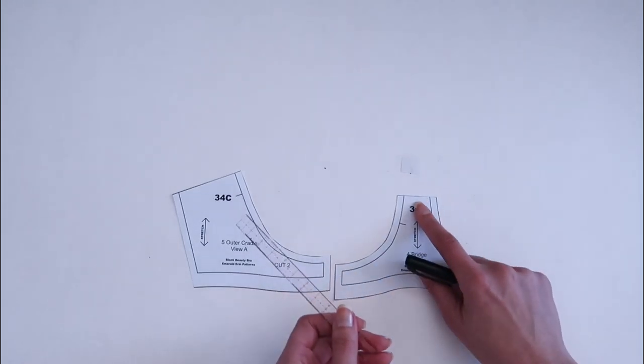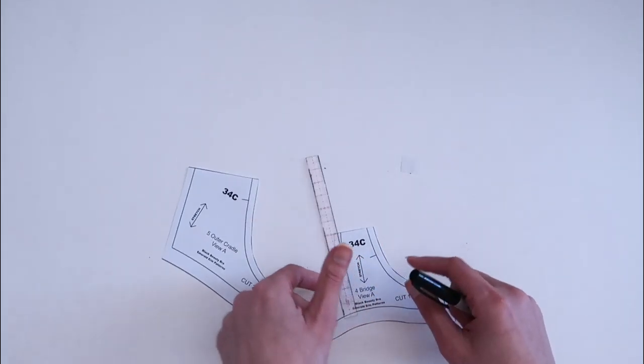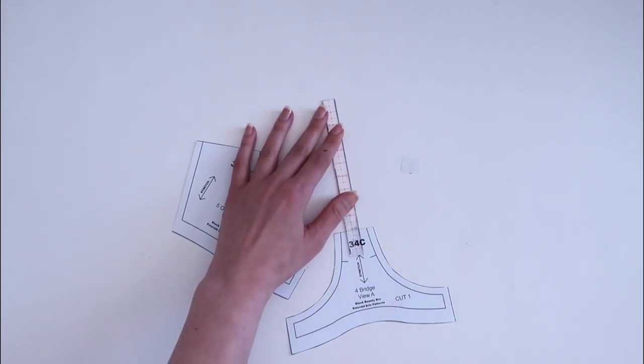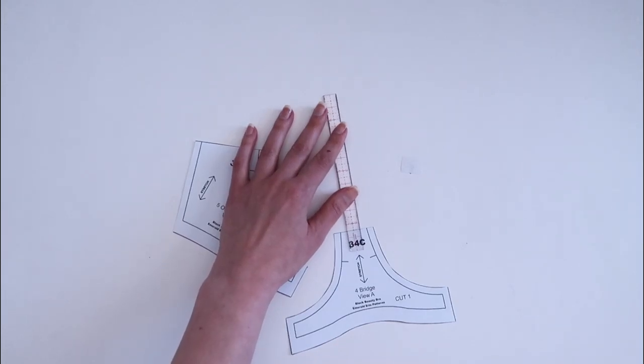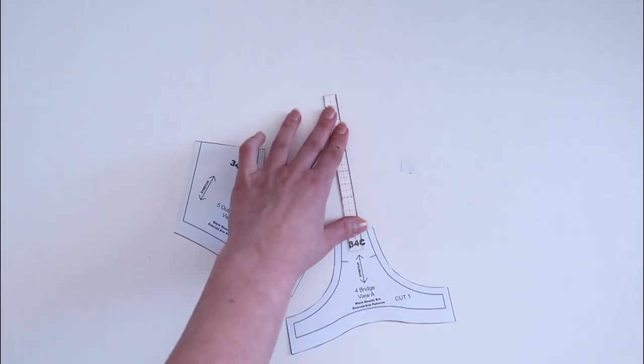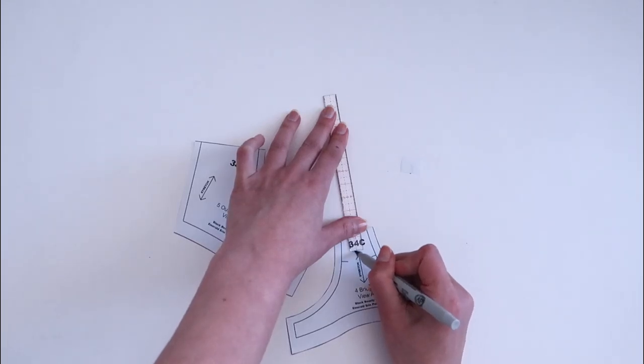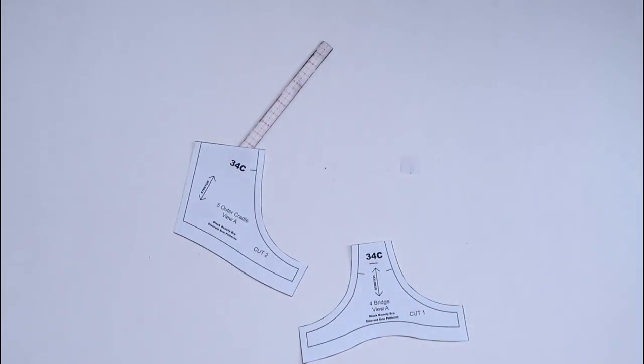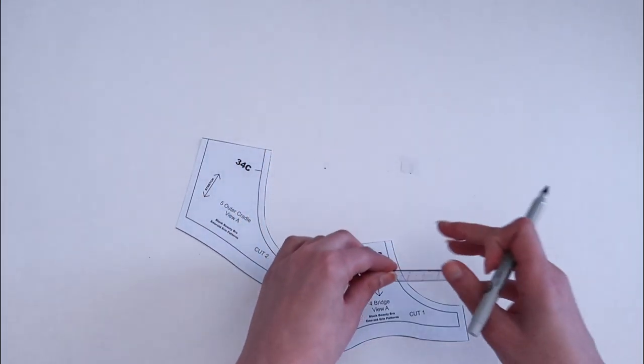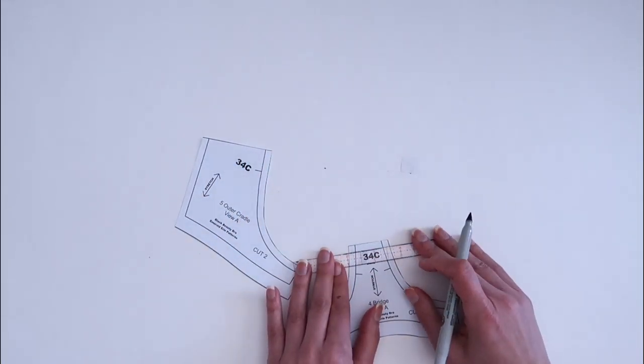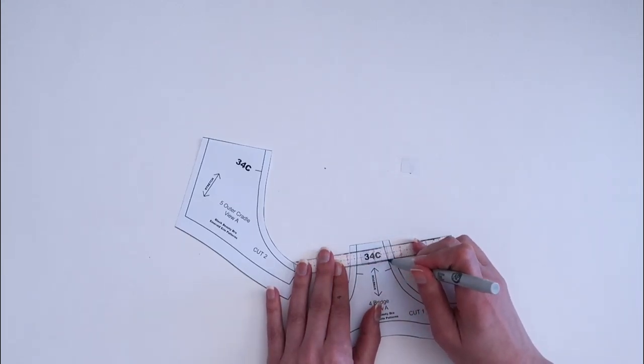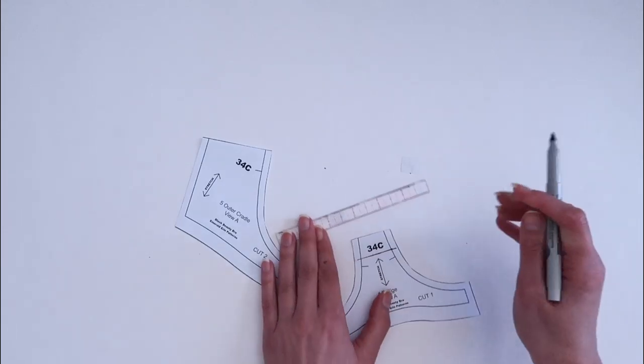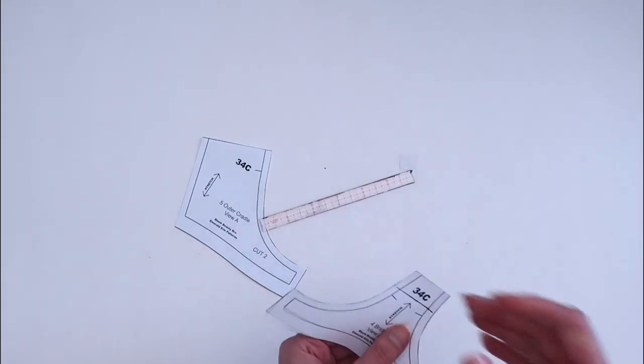So the first step is to measure three quarters of an inch down on your bridge, or however much that difference is for you. So I'm going to draw a little line right there. And then I'm just going to continue that. So then we can cut off that.